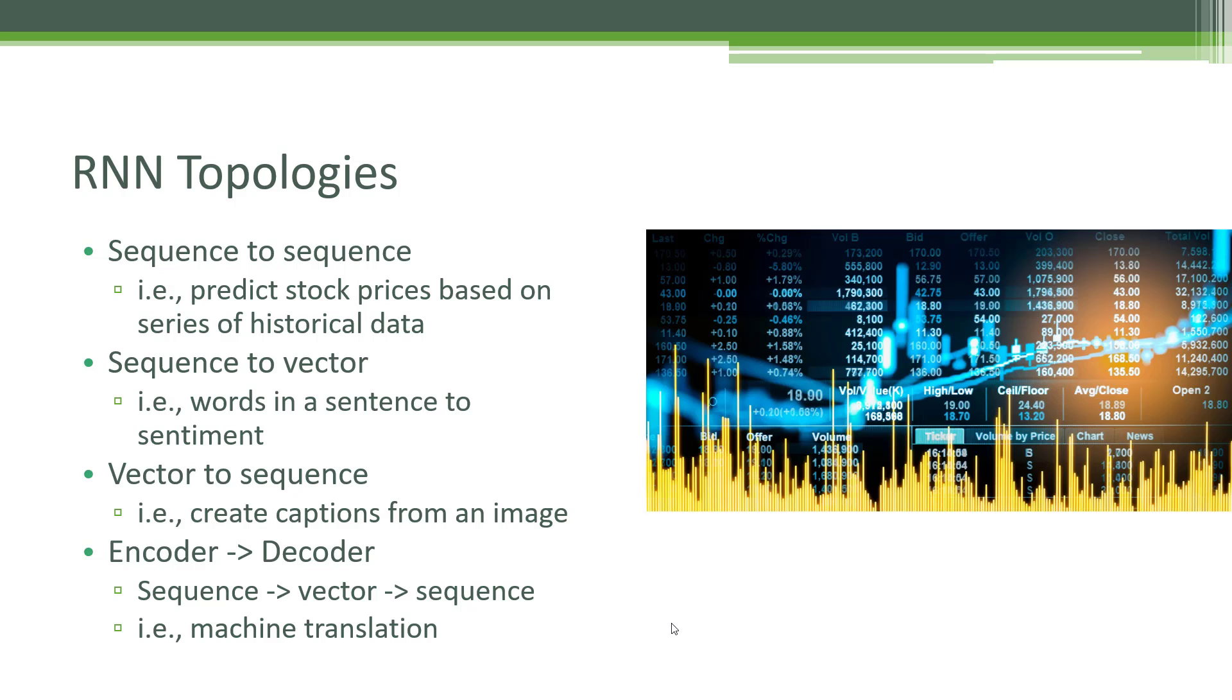An example of that would be taking an image, which is a static vector of information, and then producing a sequence from that vector, for example, words in a sentence, creating a caption from an image.